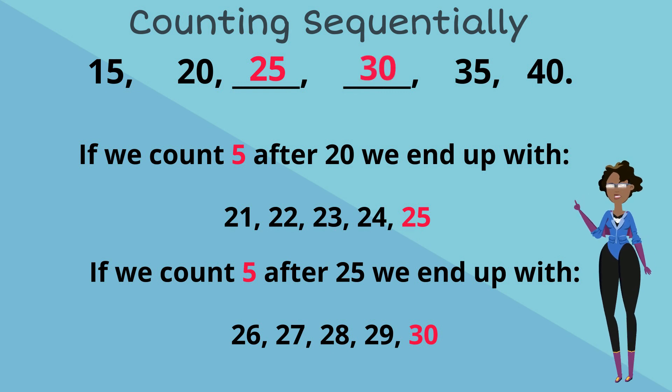And if you want to verify that you skip counting sequentially in 5s, continue from 30 to make sure you get 35, and then continue from 35 to make sure you get 40.